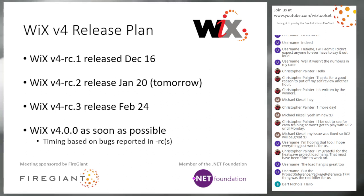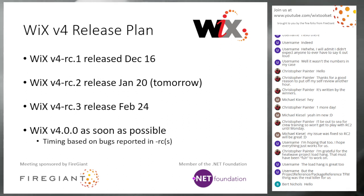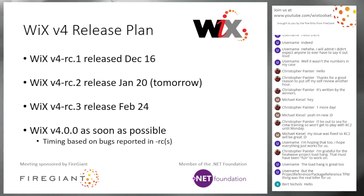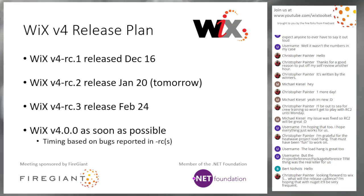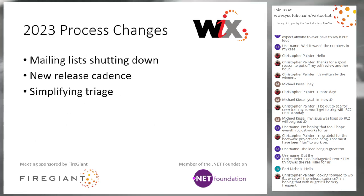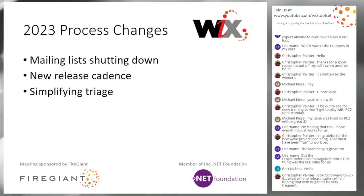I did a Wix 4 summit on .NET Foundation this last week — kind of a wrap-up to get more people excited about Wix 4. I've done a lot of streams this week. Having enough time to think about what we're going to be doing going forward, how things look as we march toward Wix 5. So what are the process changes we're going to do at a high level? The mailing lists are going to go away. We're going to pick up a new release cadence, and we're going to try to simplify triage. I'll go into more detail on each of those.